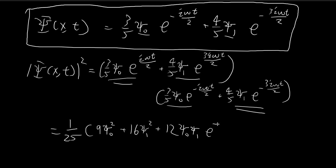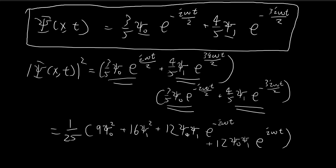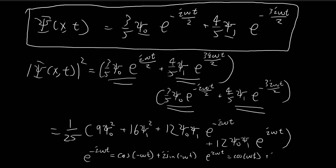When the exponential terms of the cross terms combine, you get e to the power of negative i omega t, and the other cross term gives e to the power of positive i omega t. We can combine these using Euler's formula: e to the power of negative i omega t equals cosine(negative omega t) plus i sine(negative omega t), and e to the power of i omega t equals cosine(omega t) plus i sine(omega t). When you add these two together, you can simplify further.